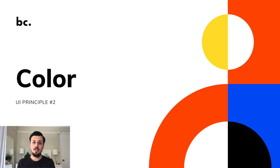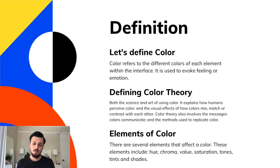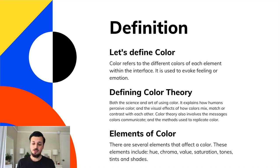So let's first start off by defining color and color theory. Color refers to the different colors of each element within the interface. It is used to evoke feeling or emotion. Color theory is both an art and a science of using color. It explains how humans perceive color and the visual effects of how colors mix, match, or contrast with each other. Color theory also involves the messages colors communicate and the methods used to replicate color.